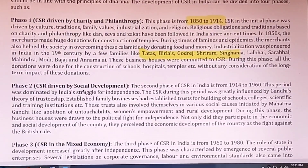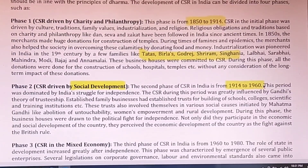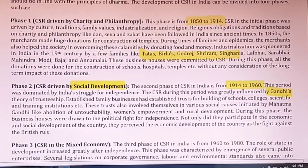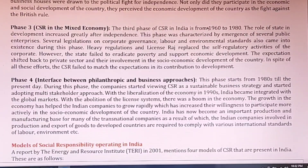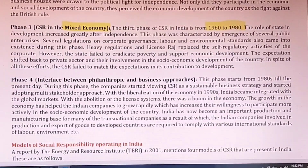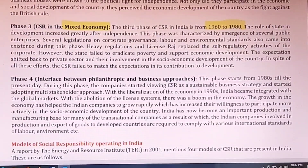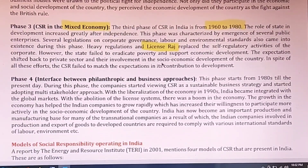Phase 2, from 1914 to 1960, focused on social development. Business people were encouraged to participate in the freedom movement and take care of social development. Phase 3 started from 1960 to 1980, when India had a mixed economy. Jawaharlal Nehru introduced a lot of rules and provisions during this time. A license raj existed in India during this phase. Phase 4 started from 1980 onwards, representing an interface between a philanthropic and business approach — which is the phase we are currently in.